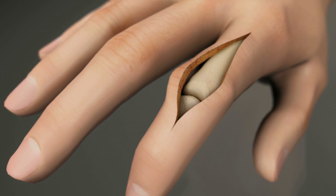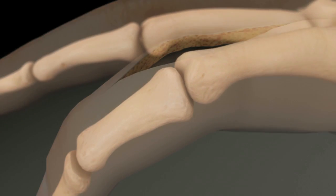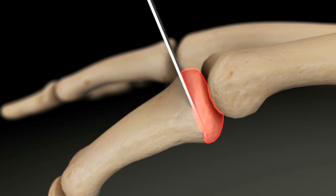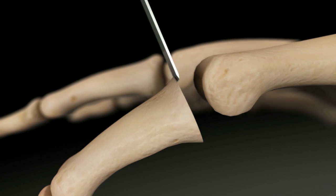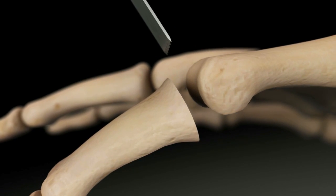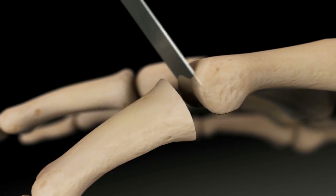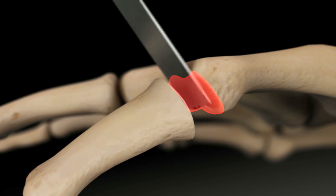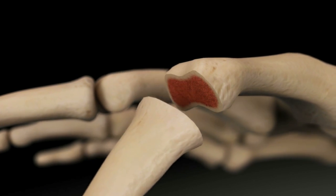Expose the joint by making an incision dorsally on the proximal side of the joint. Remove the damaged joint surfaces. Cut the distal bone perpendicular to the dorsal surface. Angle the proximal bone cut to the angle of fusion desired. A cup and cone technique can also be used.